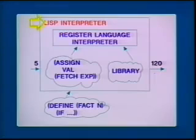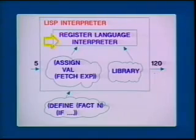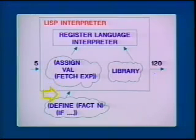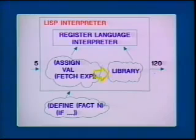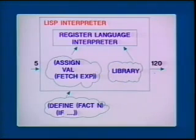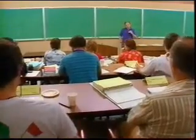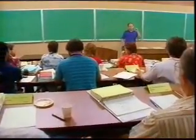Inside the LISP interpreter, there's a general register language interpreter that configures itself to behave like a LISP interpreter, because you put in a whole bunch of instructions in register language — this is the explicit control evaluator. And it also has a library of primitive operators and LISP operations and things like that. That's the general strategy of interpretation: we're writing an interpreter to raise the machine to the level of the programs that we want to write.